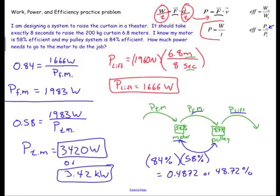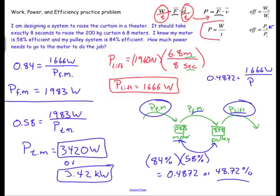So 0.84 times 0.58 that's equal to 0.4872 or 48.72% efficiency. And then what I can do is I can actually just compare these two numbers directly and know that they will have a combined efficiency between them of 48.72%. So I would have had 0.4872 equals 1666 watts over the power to the motor. And if you divide this 1666 number by this fraction right here, you will find that you get the same number there as I got here.